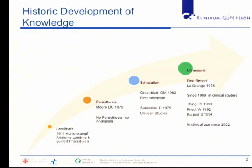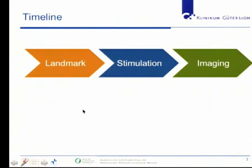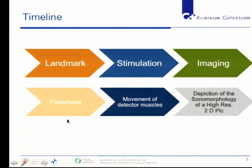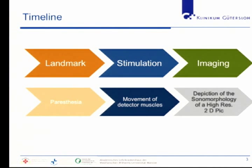In this development and timeline, we had landmarks, stimulation, and imaging. Closely connected with landmarks was paresthesia. With stimulation, we talk about movement of the effector muscles. And with imaging, we talk about depiction with sonomorphology and the high resolution of a two-dimensional picture.